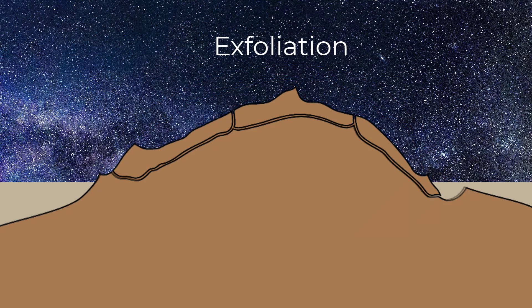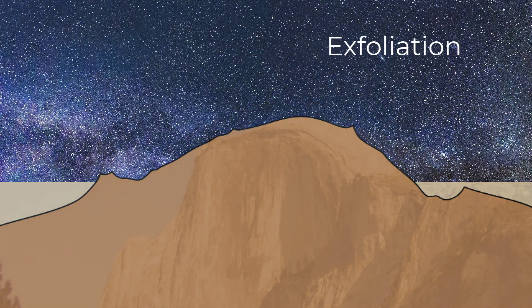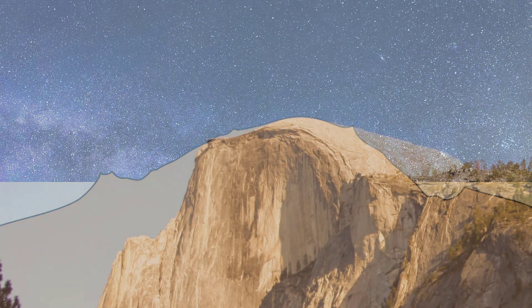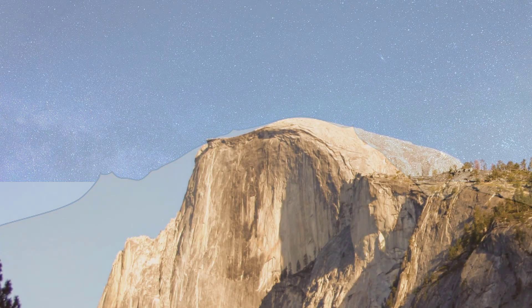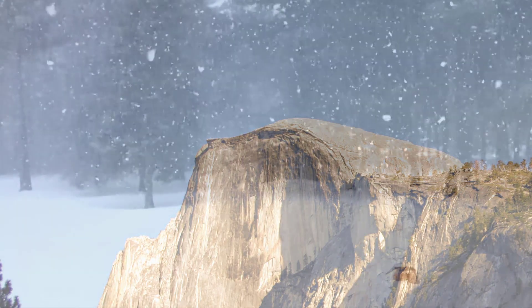It often also resembles the peeling of an onion, where the layers are removed from the outside in. Yosemite's Half Dome is a well-known example of pressure release weathering.